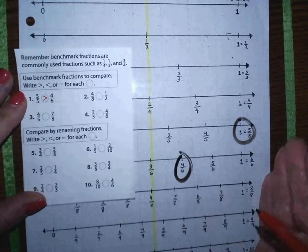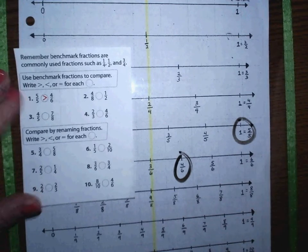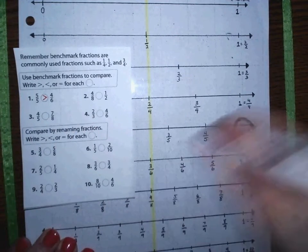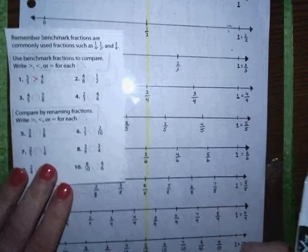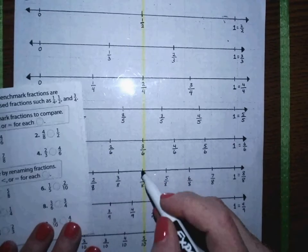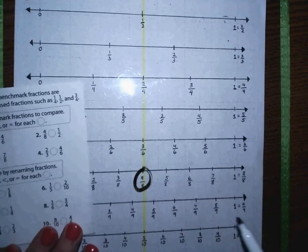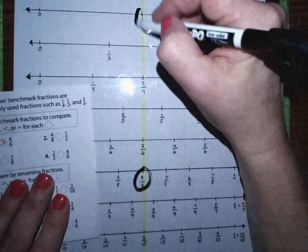The number on the right will always be larger than the number on the left. Let's look at example number two. I've got four-eighths, which is down here, and one-half.